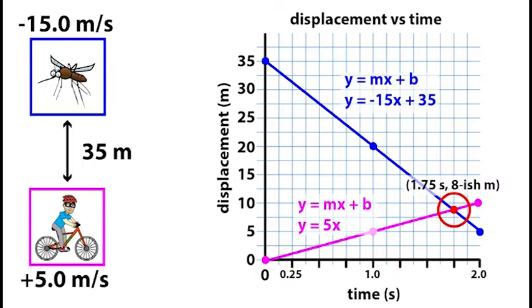Think of the equations of these two lines. I would have an equation of y equals 5x, because my slope was 5 meters per second and I didn't have a y-intercept. And the mosquito would have an equation of y equals negative 15x plus 35. These equations are in slope y-intercept form, which you'll remember from back in Math 10C.